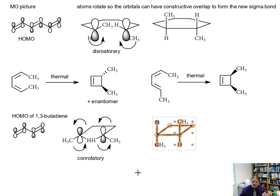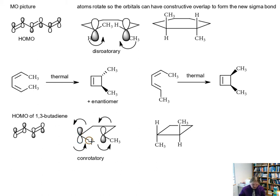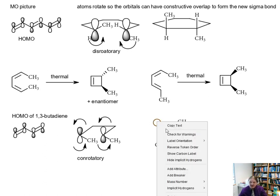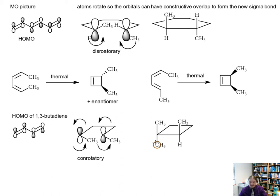If we switched the arrangement of the atoms so that one of the methyl groups was on the inside, now both methyl groups are pointing in the same direction relative to the ring closure. They're both rotating clockwise or counterclockwise, so both methyl groups are going to end up facing in the same direction. This is actually quite predictable.